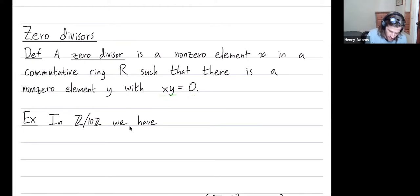Let's see some examples of this. In the integers mod 10 we have 2 times 5, which is 10 or zero mod 10, and neither 2 nor 5 are zero, but yet when you multiply them you get zero.